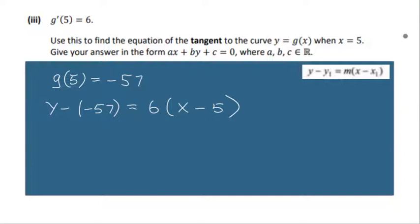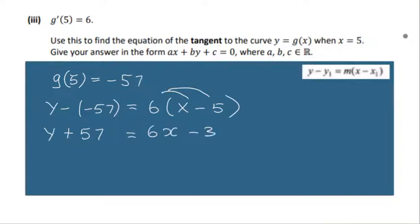Let's multiply this out and check everything as we go. So y minus negative 57 is y plus 57. And then we have 6x — let's distribute: 6 by x, and 6 by negative 5, which is negative 30. So let's bring everything to one side. The format of the tangent is ax plus by plus c is equal to 0.